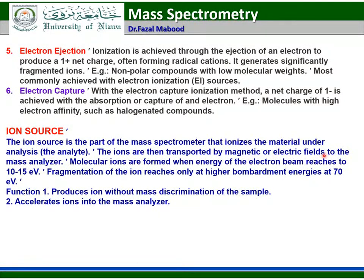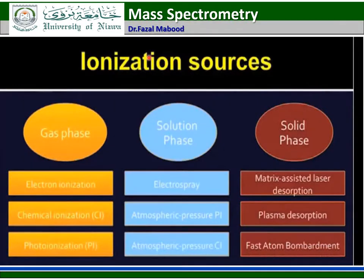Molecular ions are formed when the energy of the electron beam reaches 10 to 15 eV. Fragmentation of the ion occurs only at higher bombardment energy of 70 eV. The ion source produces ions with mass discrimination of the sample and accelerates ions into the mass analyzer. Based on the phase of the sample — gaseous, solution, or solid — different ionization sources are used. For gaseous phase: electron ionization, chemical ionization, and photo ionization. For solution phase: electrospray ionization, atmospheric pressure ionization, and atmospheric pressure chemical ionization. For solid phase: matrix-assisted laser desorption ionization (MALDI), plasma desorption, and fast atom bombardment ionization.